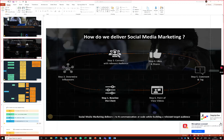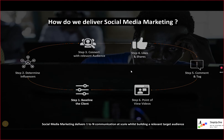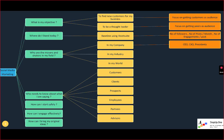It looks like it's starting to record now. What I want to do today is cover the social media marketing aspects — these six steps we know very well and have been following. In order to deliver social media marketing, we always start with baselining the client using Hootsuite, we determine the influencers, go to the relevant audience, like and share their content, etc. I want to give it a bit more detail and then jump into one aspect of it.